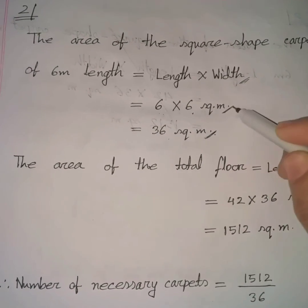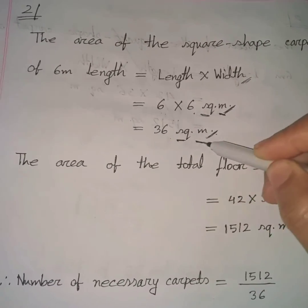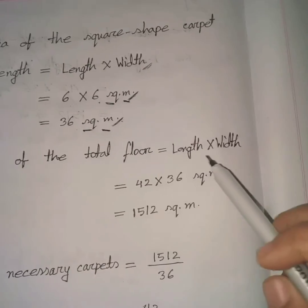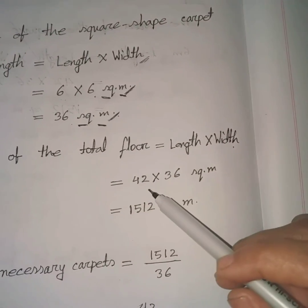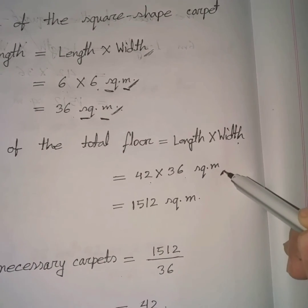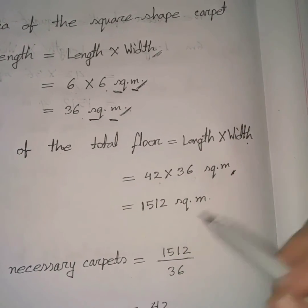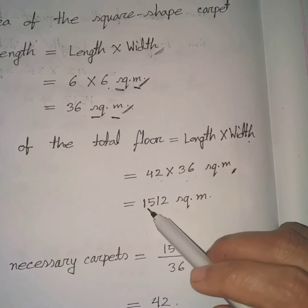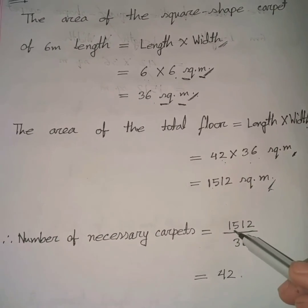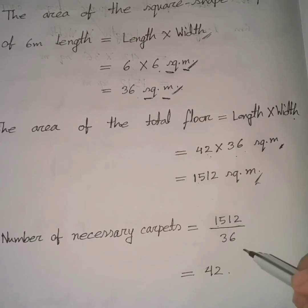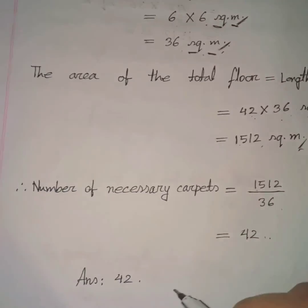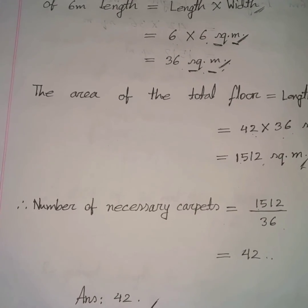Now find the total area of the floor: area = length × width = 42 × 36 = 1512 square meters. The number of necessary carpets = 1512 ÷ 36 = 42. Hence the answer is 42. All of you stay well, goodbye.